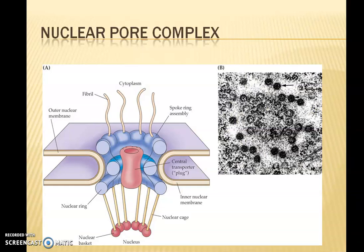Coming to the nuclear pore complex, let us see its detailed structure. Nuclear pores have an approximate size of 50 to 100 nanometers. Electron microscopic studies revealed that the nuclear pore complex is a complex structure. It has two rings: an outer cytoplasmic ring and an inner nuclear ring.